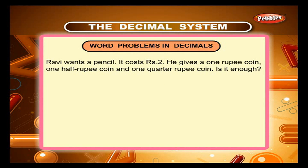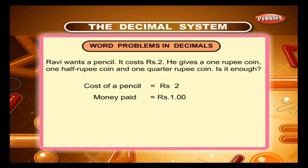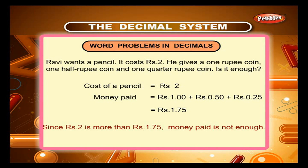Sum 2. Ravi wants a pencil. It costs rupees 2. He gives a 1 rupee coin, 1 half rupee coin and 1 quarter rupee coin. Is it enough? Answer: Cost of a pencil = rupees 2. Money paid = rupees 1 + rupees 0.50 + rupees 0.25 = rupees 1.75. Since rupees 2 is more than rupees 1.75, the money paid is not enough.